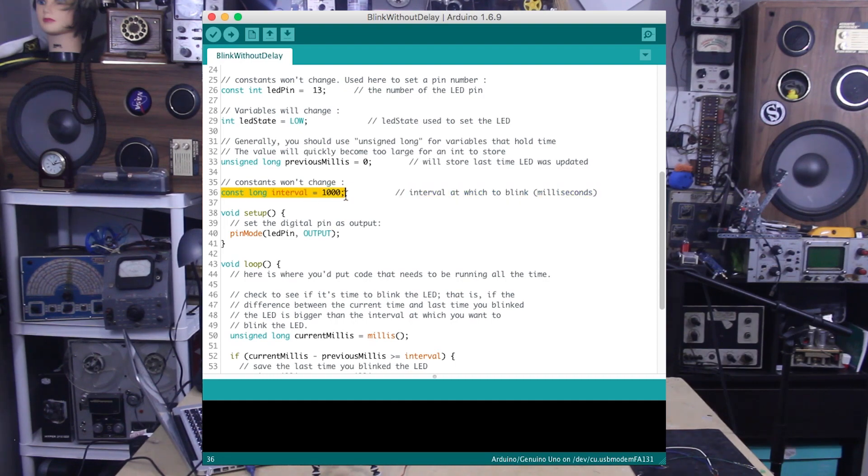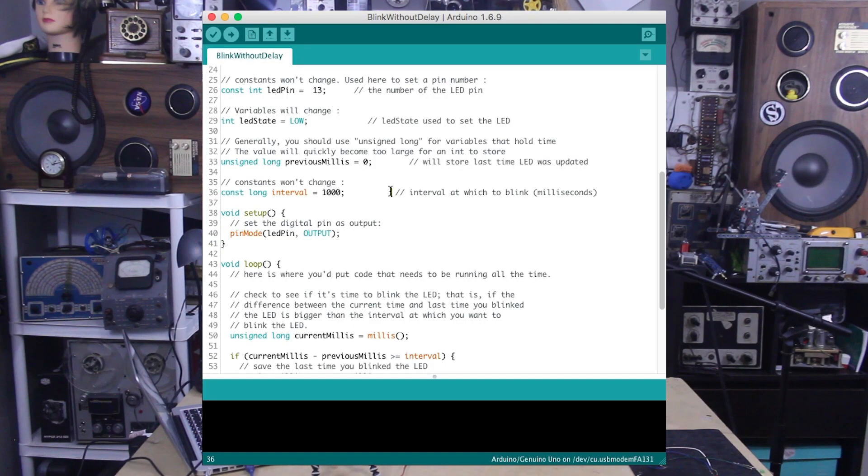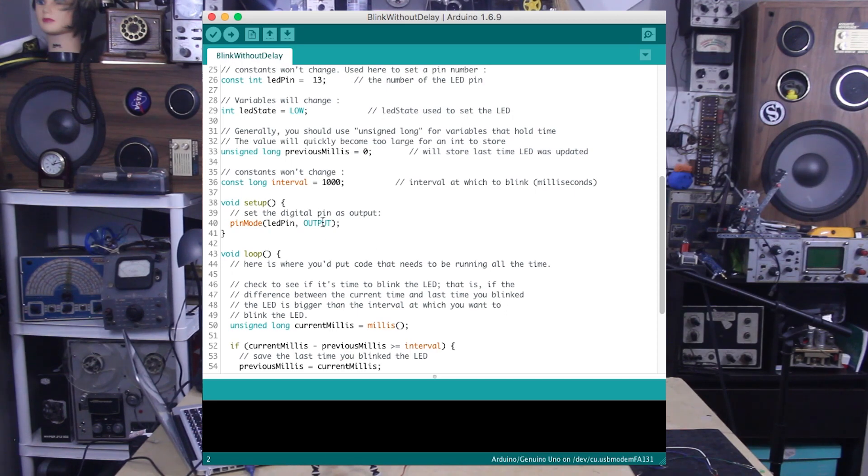Const long is also 32 bits but will never change because of the const or constant keyword. Setting this to 1000 will set our delay time as 1000 milliseconds or one second, but remember it's not actually delay—it's the amount of time we're counting. Then set your output pin as usual.